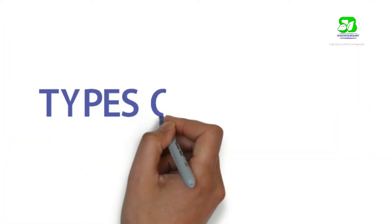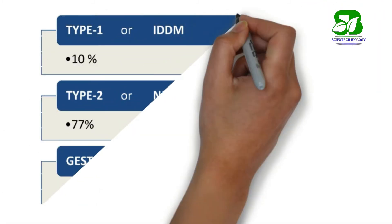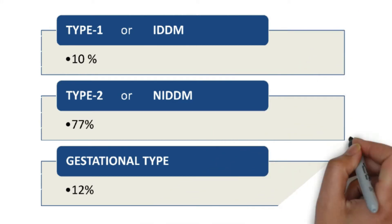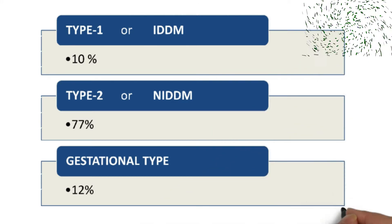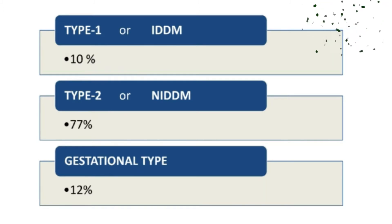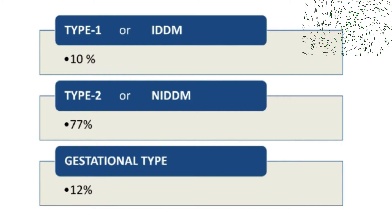Let's see the types of diabetes. The most common types are Type 1 diabetes, also called IDDM, which occurs in 10% of the population; Type 2 diabetes, or NIDDM, the most common type that occurs in 77% of the population; and gestational diabetes, that occurs in 12% of women in the population.